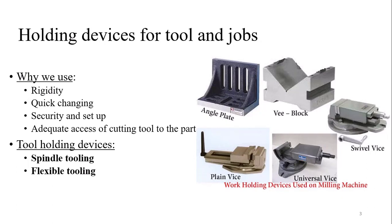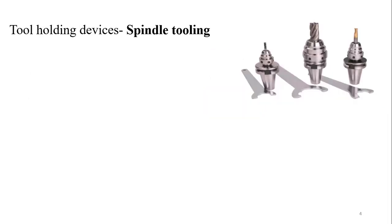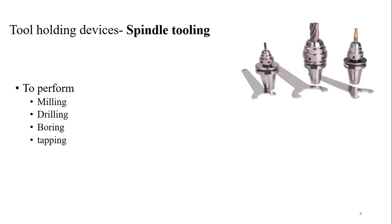The holding devices for the tool are of two types: spindle tooling and flexible tooling. Starting with spindle tooling — this is a tool which is directly installed onto the spindle. It is a ready-made tool directly installed onto the spindle. It is used to perform milling, drilling, boring, and tapping functions.